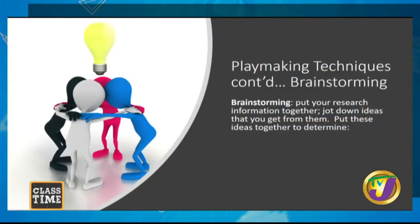Having done your research, you need to do something with this information through brainstorming. Remember that playmaking asks you to work in groups of three to five. Think about all of you coming back to the table with your research. Together in your group you put your ideas together — jot them down and think about what the research is telling you and what you can use it to do, to determine possible ideas for your story, characters, and actions.